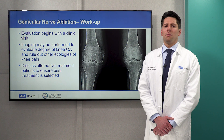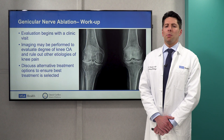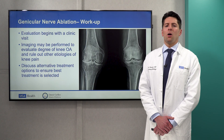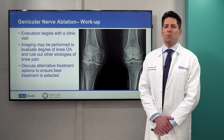Our workup for geniculate nerve ablation and geniculate artery embolization begins with a clinic visit. We may perform imaging during that visit to evaluate your knee osteoarthritis or rule out other etiologies of knee pain. We will also discuss alternative treatment options to help ensure the best treatment is selected.